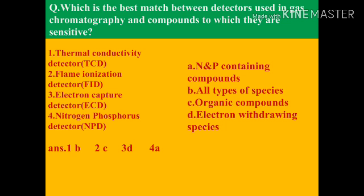Next question: which is the best match between detectors used in gas chromatography and the compounds to which they are sensitive? Thermal conductivity detector matches all types of species. Flame ionization detector matches organic compounds. Electron capture detector matches electron withdrawing species. Nitrogen phosphorus detector matches nitrogen and phosphorus containing compounds.